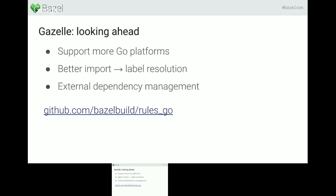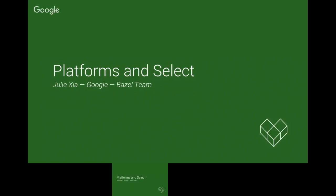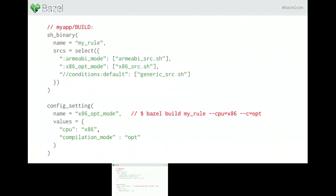Next is Julie, who works on the configurability team inside the Bazel team. She's going to talk about platforms and select, and how to make multi-platform builds work. Hi everyone, my name is Julie. I work on the Bazel team in New York. Today I'll be talking about basically what Jay just mentioned — adding platforms to select. If you're unfamiliar with select or configurable attributes, they allow you to select values of build rule attributes based on command line flags. Select statements are maps of labels to potential attribute values, and the labels represent config_settings, which are collections of command line flags.